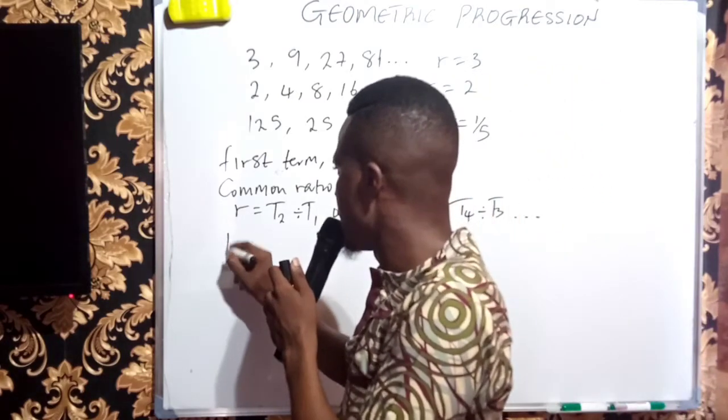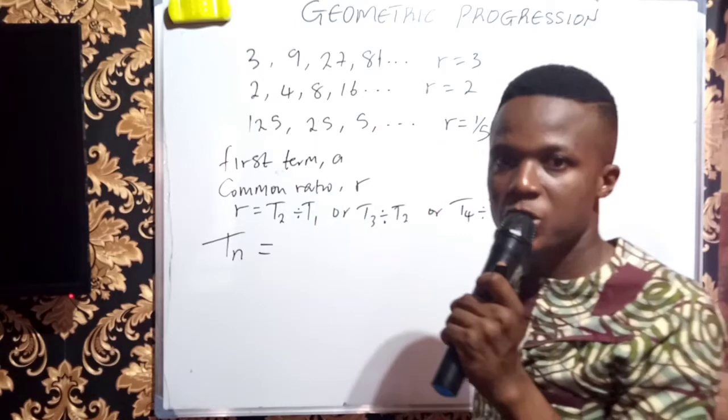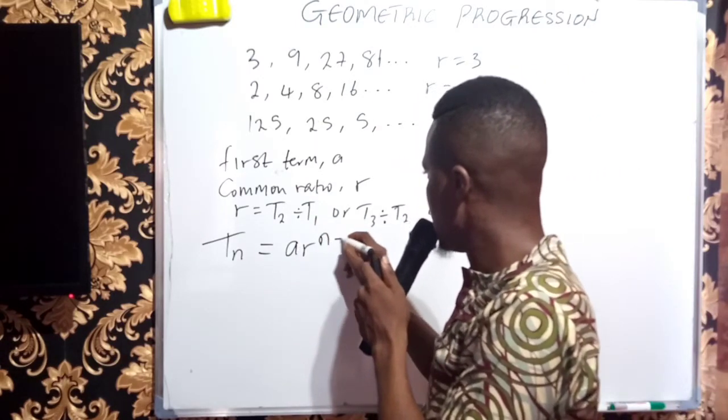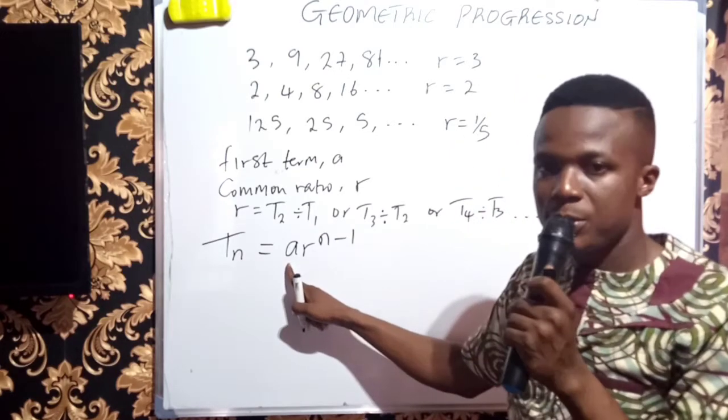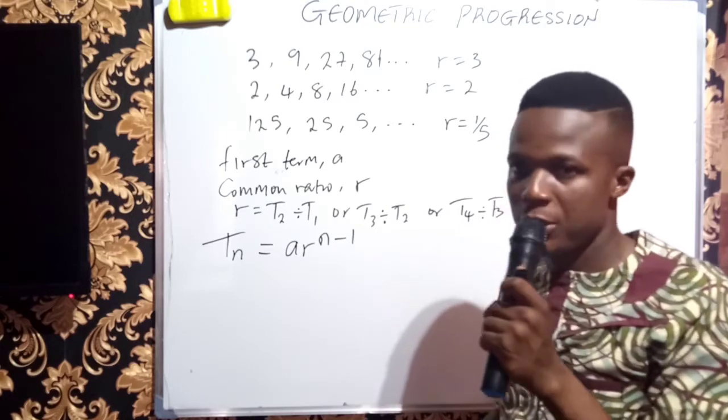Now, like you've all known, the Nth term of a geometric progression is just A times R to the power of N minus 1, where A is the first term, R is the common ratio, and N is the number of terms.